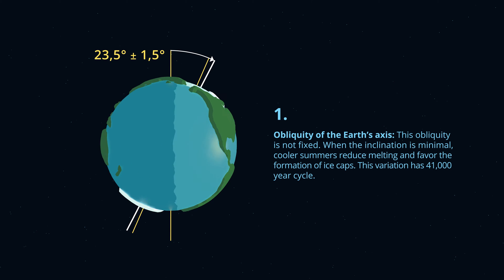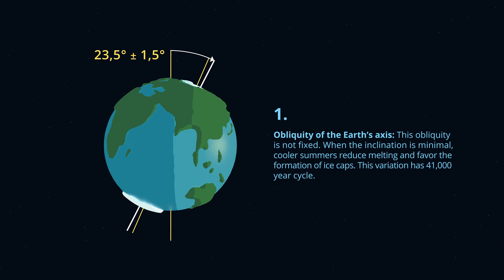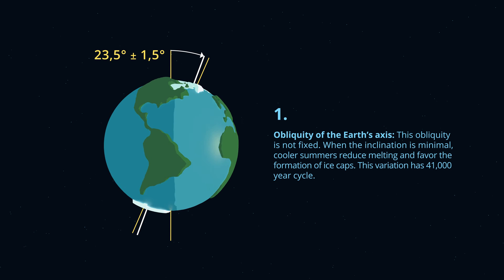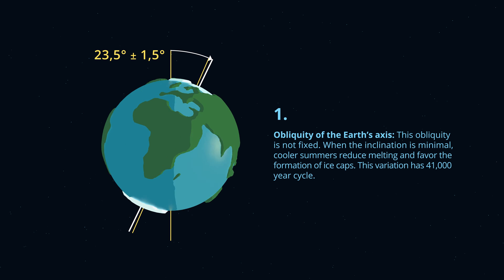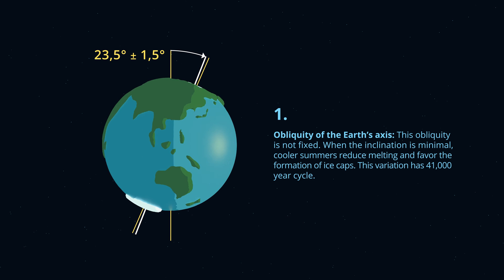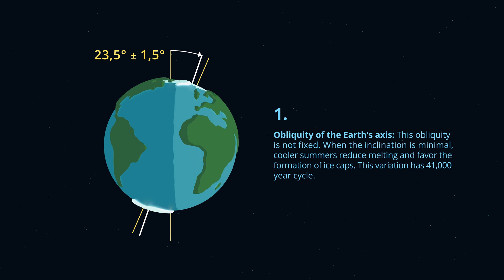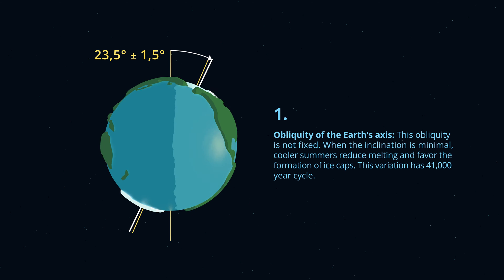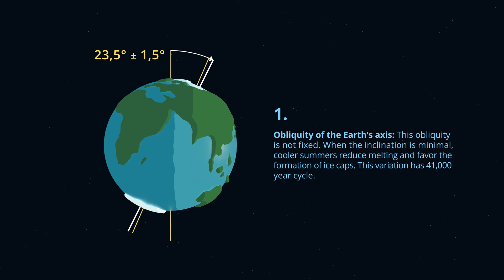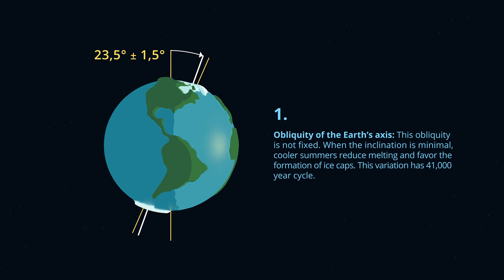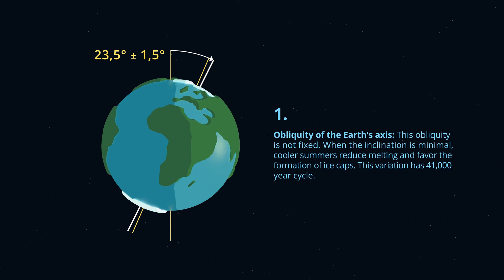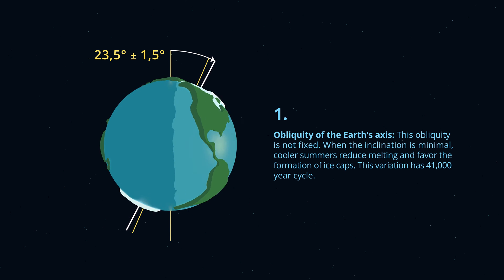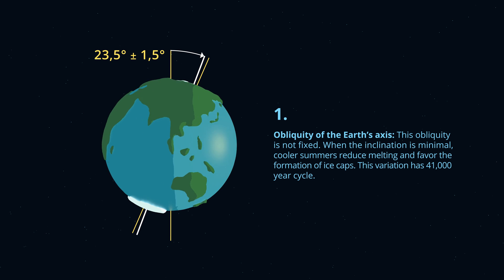Obliquity of the Earth's axis. This obliquity is not fixed — when the inclination is minimal, cooler summers reduce melting and favour the formation of ice caps. This variation has a 41,000-year cycle.